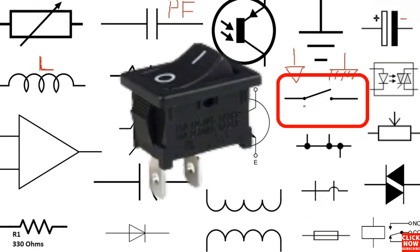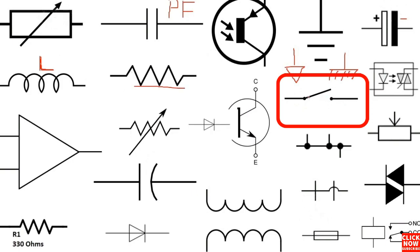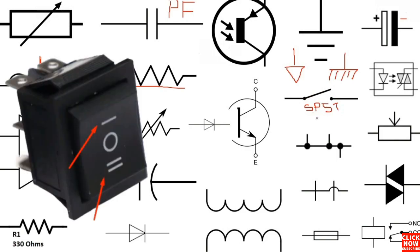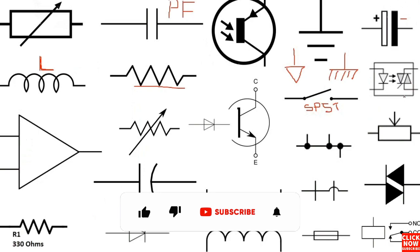Here we have a switch — this is a simple switch. We can call it the single pole single throw, or SPST. It has just one pole and one throw. There are many types of switches: single pole single throw, single pole double throw, double pole double throw, and so on. For example, this is a single pole double throw switch.